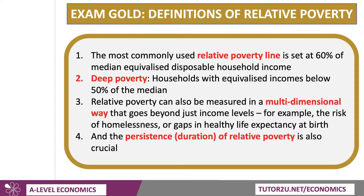Just in terms of definitions, so we know what we're talking about — the most commonly used relative poverty line in the UK and other countries is set at an income of 60% of median equivalised disposable household income. So income after tax and benefits is disposable income, and 'equivalised' means you adjust for household size. Median, of course, is the middle value in the income distribution, and we set the relative poverty line at 60% of that.